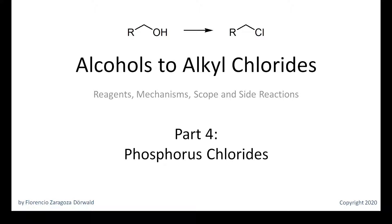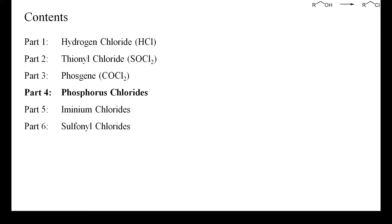Welcome everyone to part 4 of my video playlist about the best methods for converting aliphatic alcohols into alkyl chlorides. This presentation is about the use of phosphorus chlorides as deoxychlorinating reagents. These are highly selective and reactive and easy to handle, and are therefore often used for small-scale laboratory preparations.